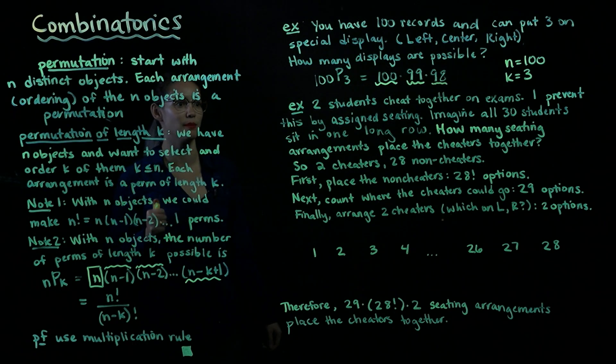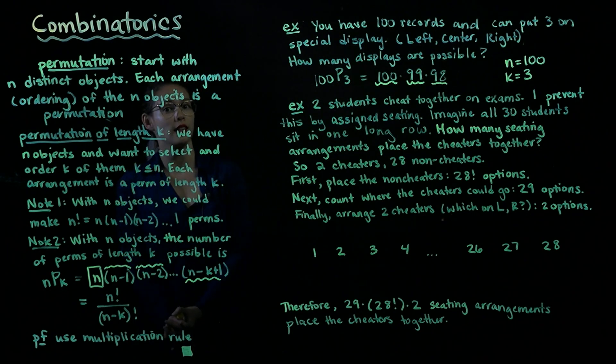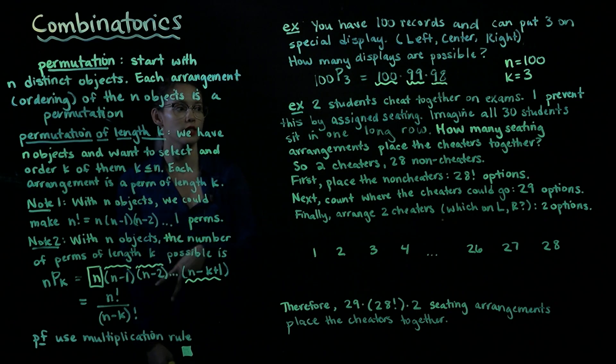Next example. Imagine that I have two students who cheat together on exams. Imagine that I try to prevent this by using assigned seating. Imagine that they have 28 classmates, so in other words there's the two cheaters, the 28 non-cheaters, giving a total of 30 students.